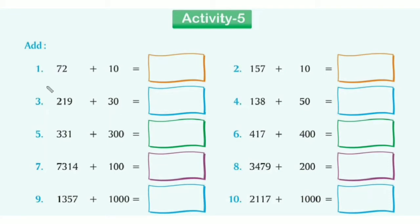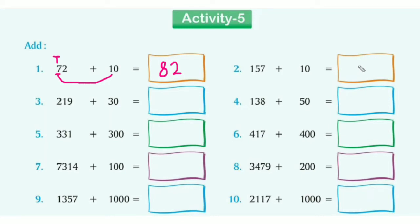Now let's see some examples. The first example: we need to add 10 to 72. We identify the tens — 7 is in the tens place. So 7 tens plus 1 ten equals 8 tens, and 2 stays as it is. So 82 is our answer. Now the second example you need to solve yourself. I will solve the third example.